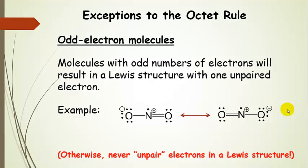Now, having said that, if you do not have an odd electron molecule and you unpair electrons and split up the lone pair and put one electron on one atom and another electron on the other atom, that is incorrect.